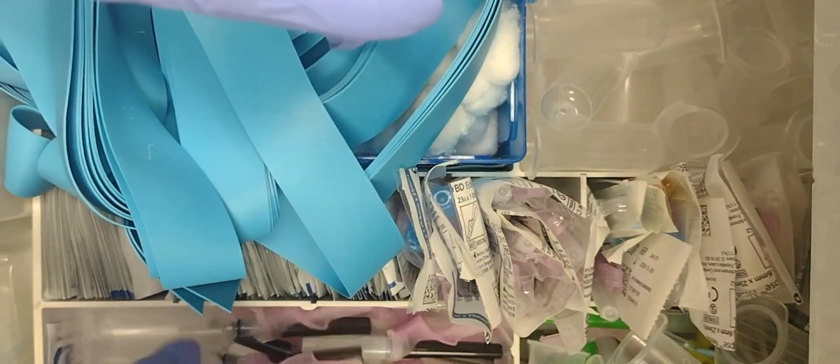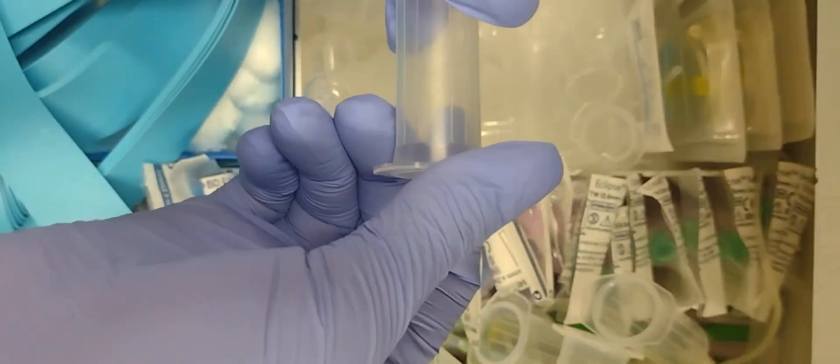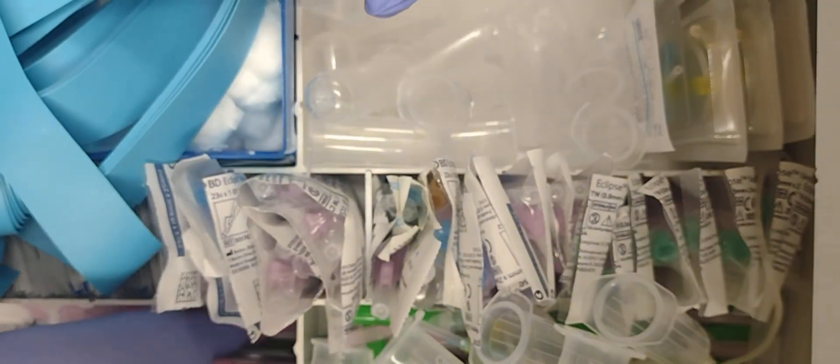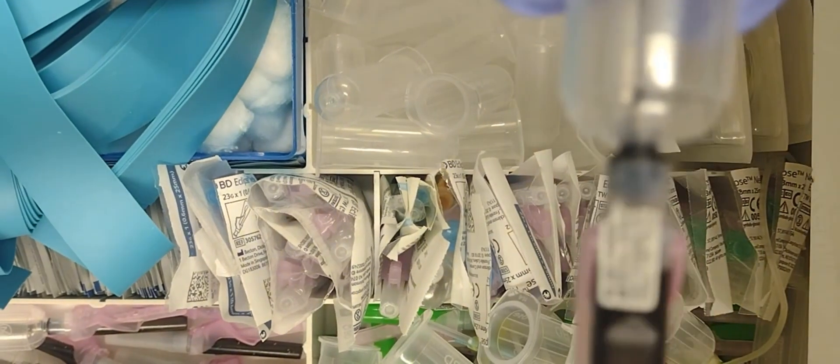Here's a video about phlebotomy, about setting up your needles. So this is a Huber, and this is a straight back vacutainer needle. This is a 22 gauge.